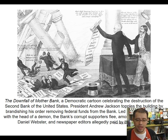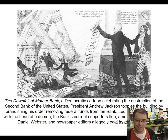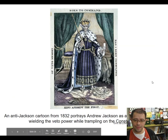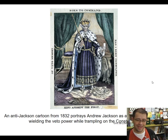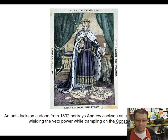We have two cartoons here. In the first, we see heavenly lightning bolts flying off of Jackson's actions as the enemies of the bank run away from him. We see Nicholas Biddle with the head of a demon, along with other famous Whigs including Henry Clay and Daniel Webster. In the second cartoon, Jackson is depicted like a king, holding the veto in his hand, standing on the ruins of the ripped-up Constitution — the idea being that Jackson is becoming a king and a tyrant.